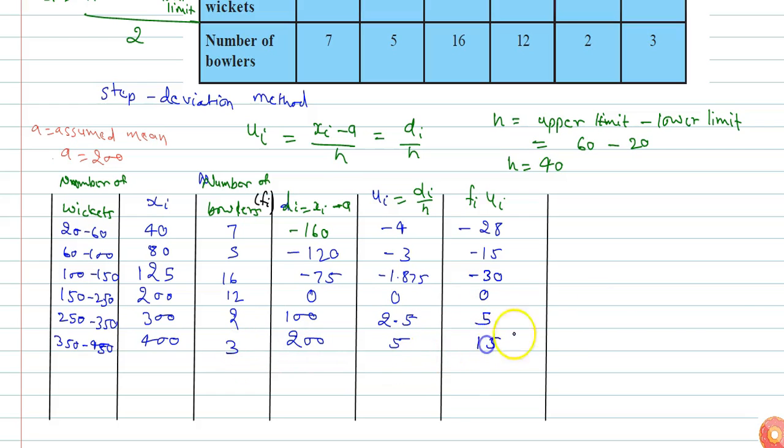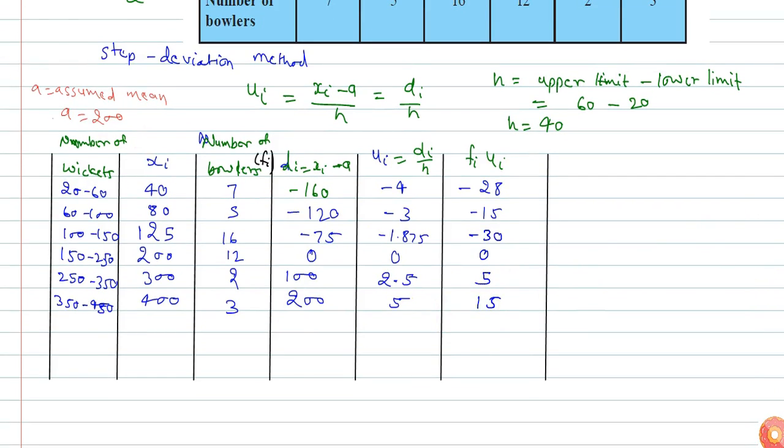From here I can calculate summation fi, which equals 45, and summation fi ui, which equals minus 53.